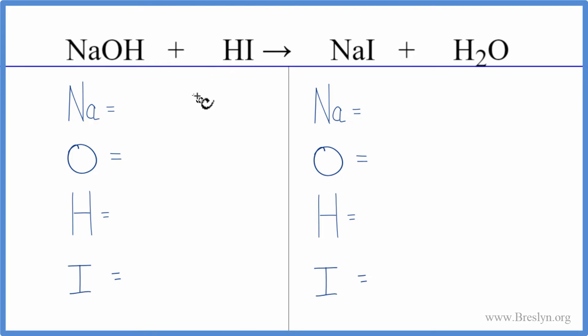Let's add the atoms up on both sides of the equation and balance it. We have one sodium, one oxygen, one hydrogen. And make sure you also count this hydrogen here. We have two of them. So one plus the one, that gives us two hydrogens and then one iodine.